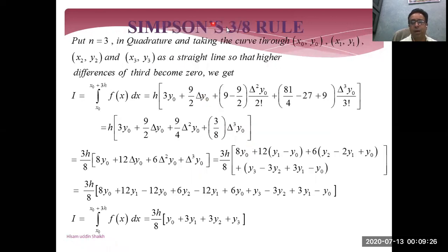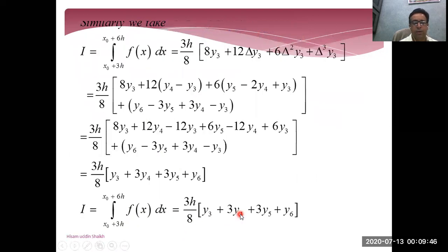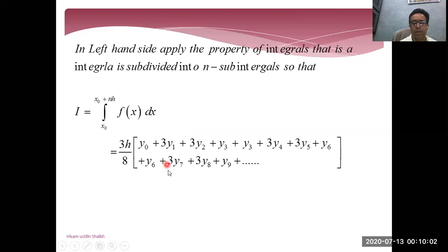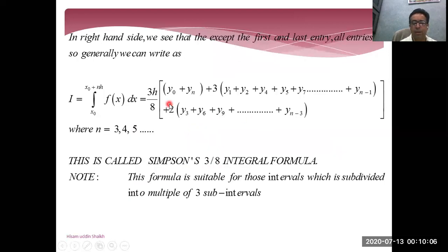In the same process, we can derive the three-eighths rule when we put n equal to 3. We take four points: x0 to x3. The result will be 3H/8 · (y0 + 3y1 + 3y2 + y3). This is called the 3/8 rule. For the second interval from x3 to x6, and similarly x6 to x9, the same pattern applies. Adding all integrals, the formula is 3H/8. Entries that are multiples of three (y3, y6, y9, y12) appear twice, and all other entries appear three times.